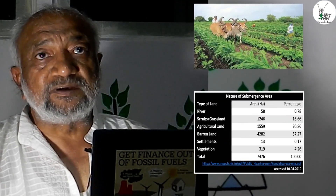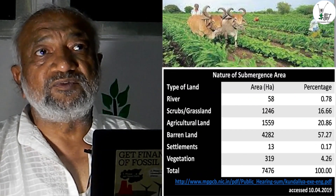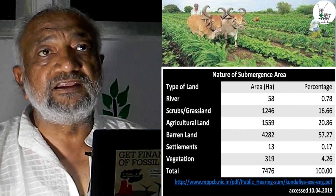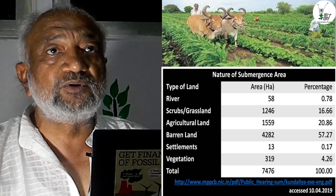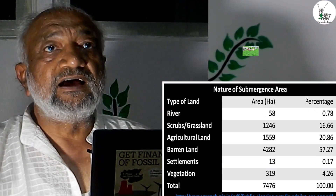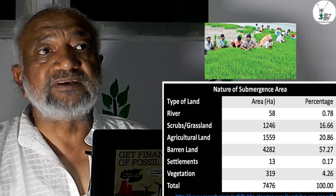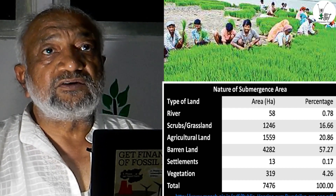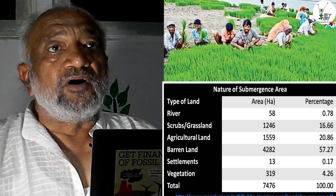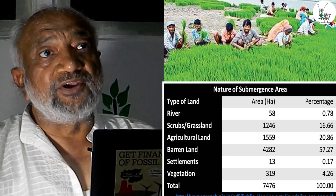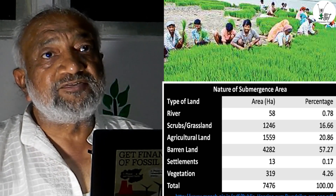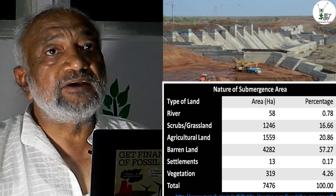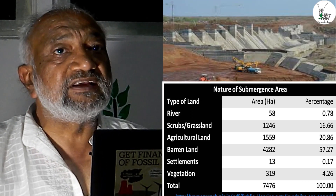If we see the nature of the submergence zone, we find that nearly about 15 square kilometers of good agricultural land is going to be submerged. We also know that close to about 50 villages are going to be directly affected by this project.